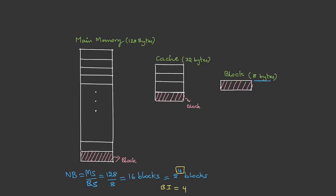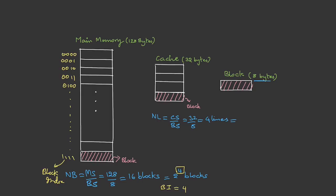The block index is 4 bits and the block indices are 0000, 0001, and so on. Similarly, the number of cache lines is cache size divided by block size: 32 divided by 8 equals 4 lines, or 2 power 2 lines, so we need 2 bits for cache index. The cache indices are 00, 01, 10, 11.